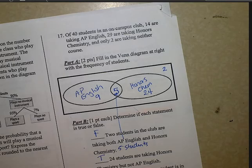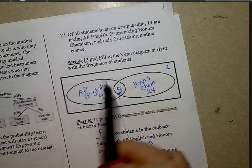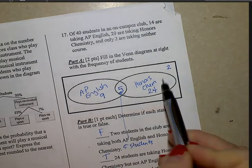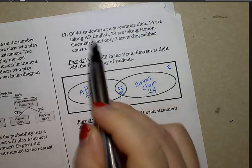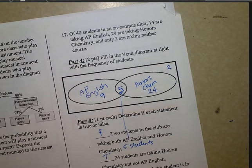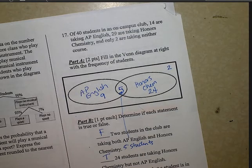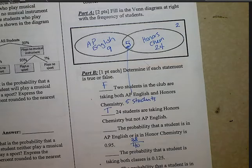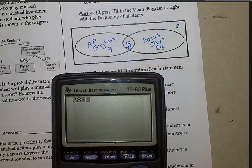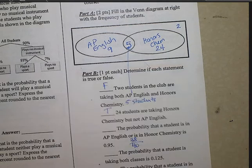The probability that a student is in AP English or Honors Chemistry is 0.95. Or means push this all together and divide by the total of 40. So I know there's 40 students in all in the club. And if I add up 9, 5, and 24, I end up with 38. So take 38 and divide it by 40. 38 divided by 40 is 0.95 or 95%. True statement.